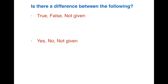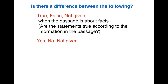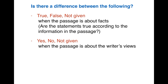The answer is yes — a very small difference. They use True-False when the passage is about facts: is this statement true according to the passage or not? The question will ask whether the statements are true, false, or not given according to the information in the passage. On the other hand, the exam uses Yes and No when the passage is about the writer's views or opinions — not facts, but the writer giving some views.